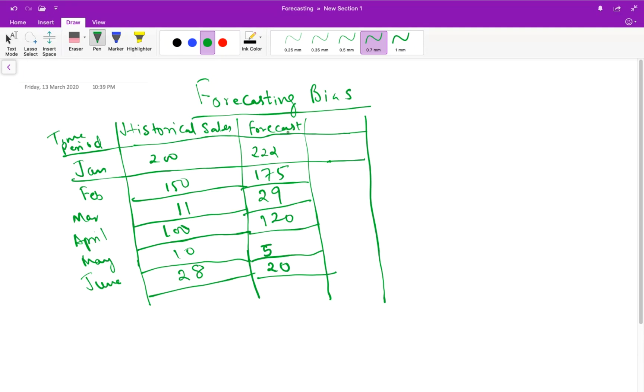Let me find the forecasting error. The error is, we will write the formula here, the error is equal to forecast minus historical sales. So here it will be 22. Here it will be 25, here it will be 18, here it will be 20, here it will be minus 5, here it will be minus 8.